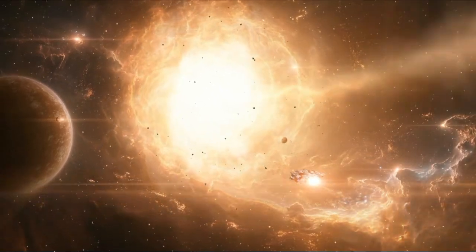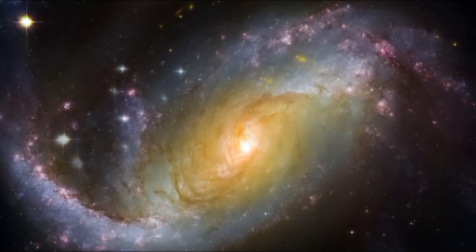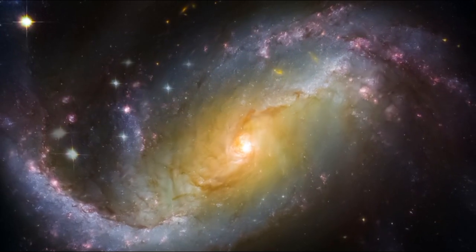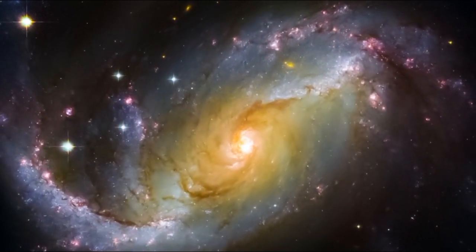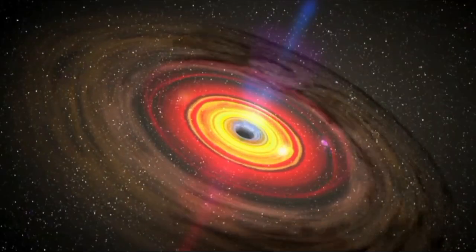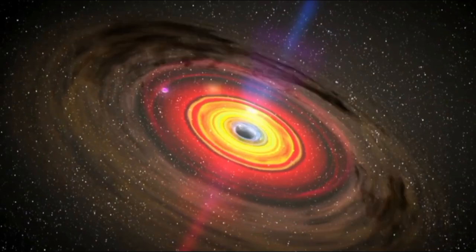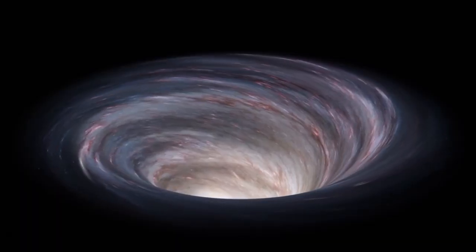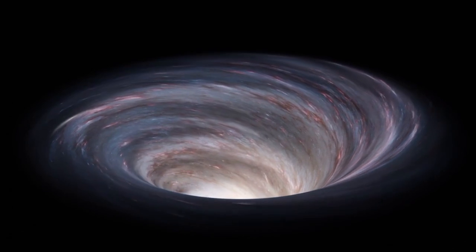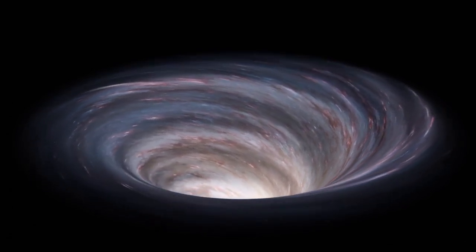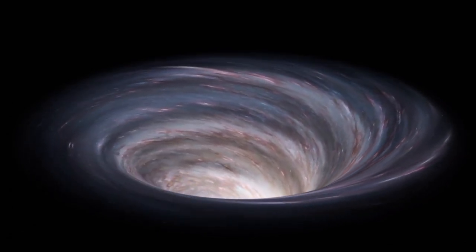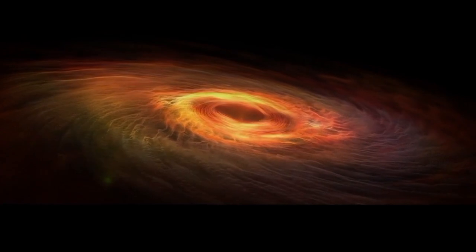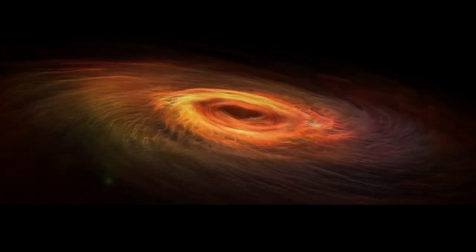The theory of how things came to be was established in 1927 based on observations of the universe's expansion. This information led to the conclusion that the universe began from a specific point and has been expanding ever since. At the time, it was hard for people and scientists to imagine a universe with both a beginning and an end. The idea of a universe that had always existed and was infinite in scope was beyond human imagination.